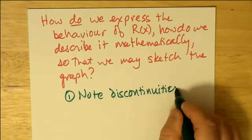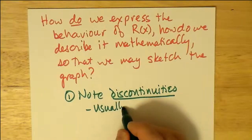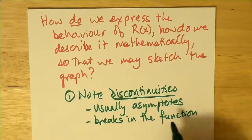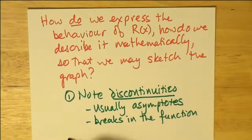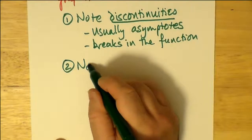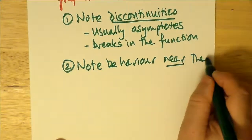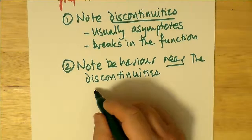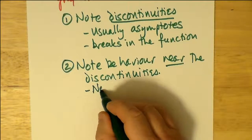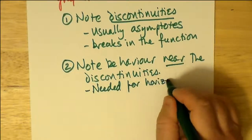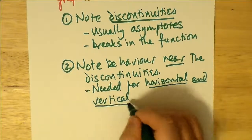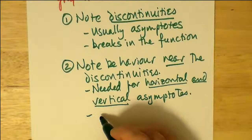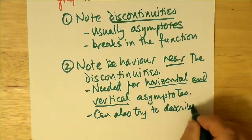So we note the discontinuities, usually the asymptotes—meaning the vertical asymptotes—any other breaks in the function, but it's usually just the asymptotes. So we note the behavior near the asymptotes: Is it going to positive infinity, negative infinity, that sort of thing? And govern ourselves accordingly here. We need to, of course, horizontal and vertical asymptotes can be sussed out that way, but we're only going to concentrate on the two vertical asymptotes. We can also try to describe the behavior near the oblique asymptotes.